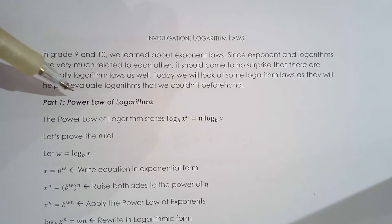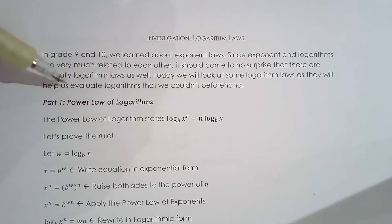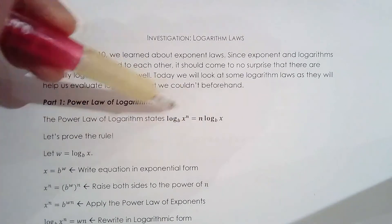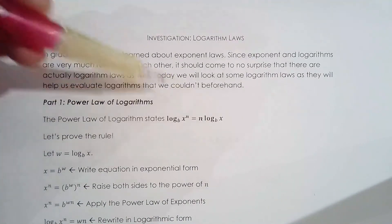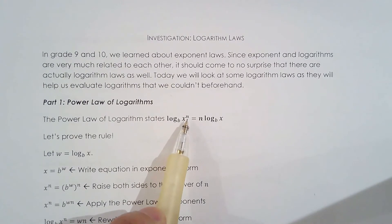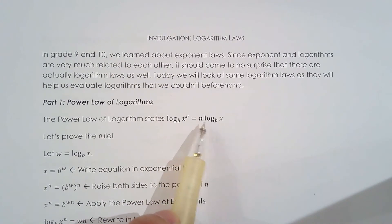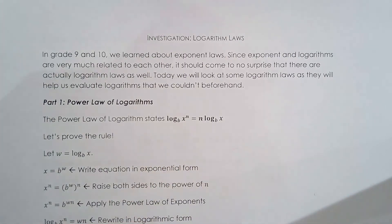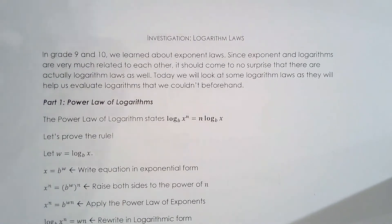The first one we're going to start with is the power law of logarithms. The power law states that log base b of x to the power of n is equal to n times log base b of x. Of course, there are restrictions on b and x, which are the same restrictions we talked about earlier when we introduced logarithms.